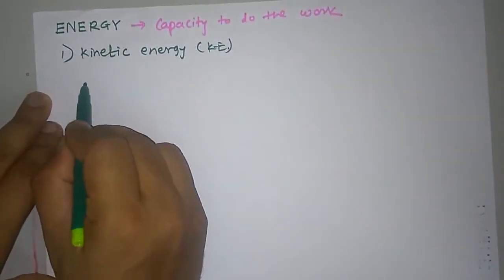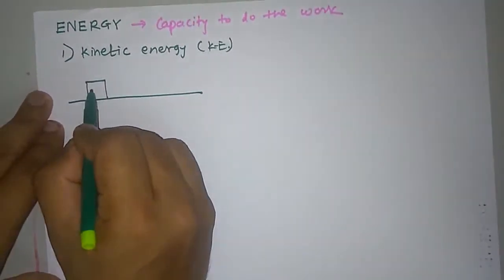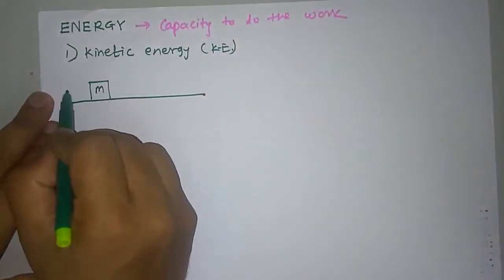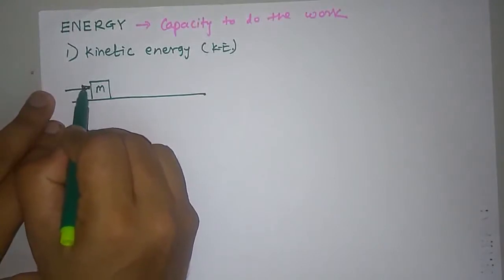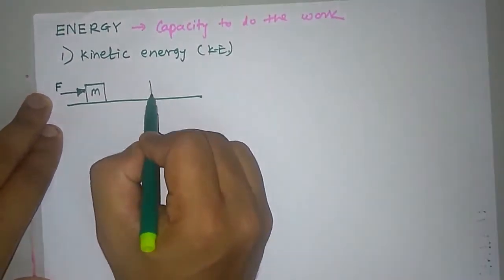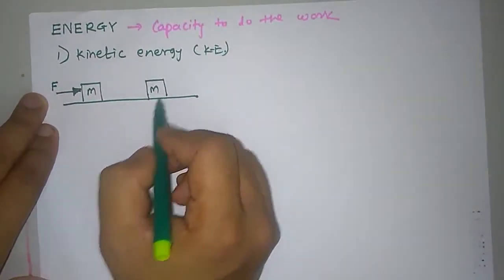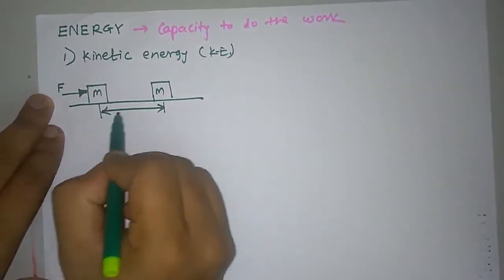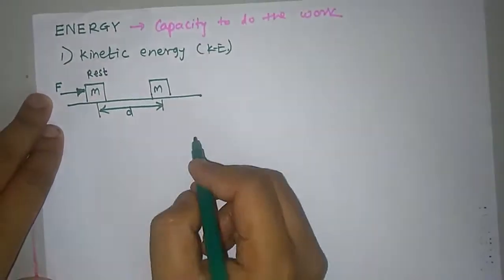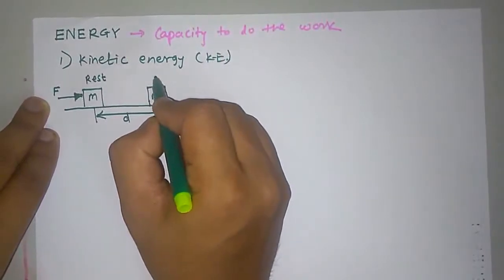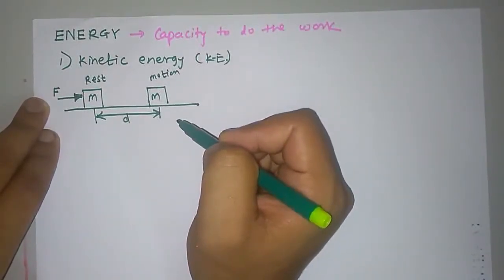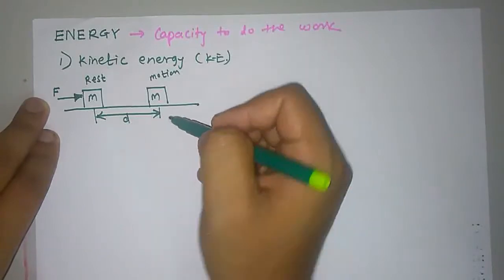To study kinetic energy, we take a simple example. A block is resting on a surface having mass of m kg. We apply force F to this mass, and due to this force the block gets displaced by a distance D. The block was initially at rest and is now in motion at this location.